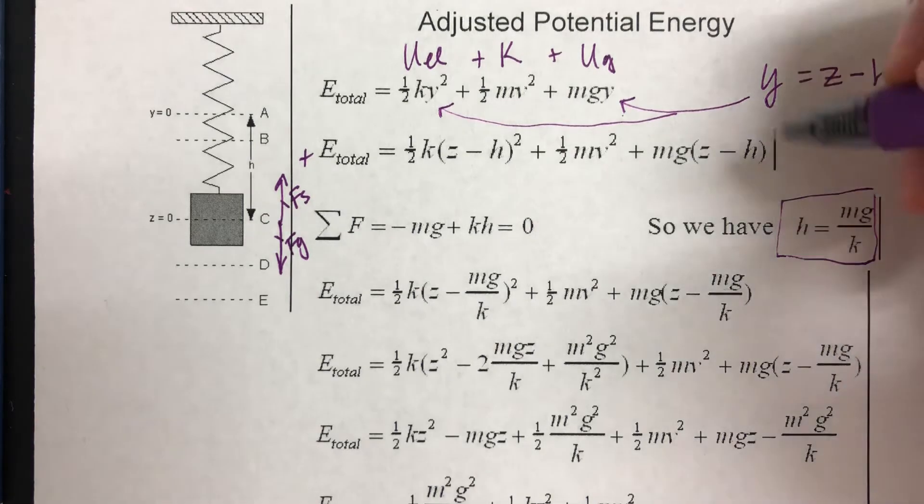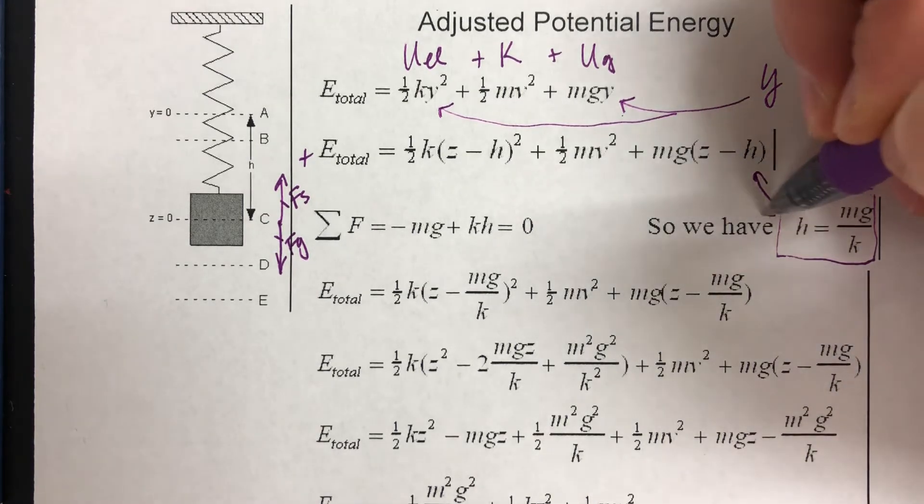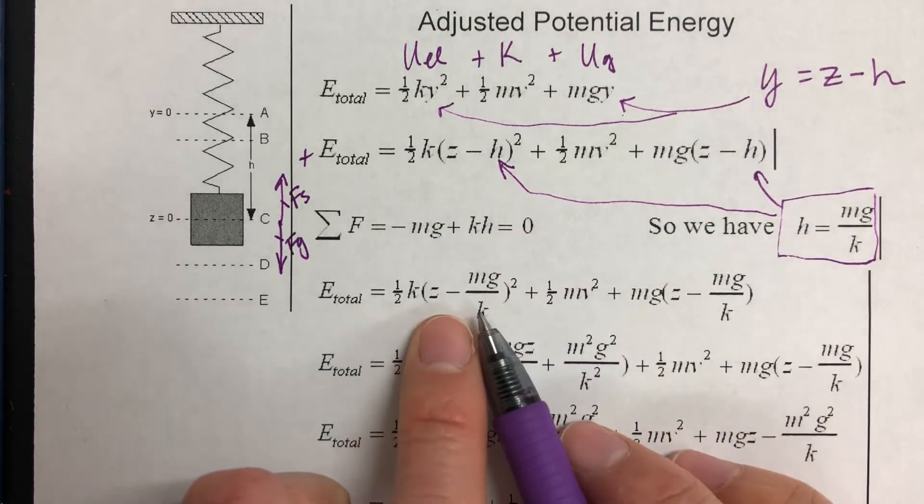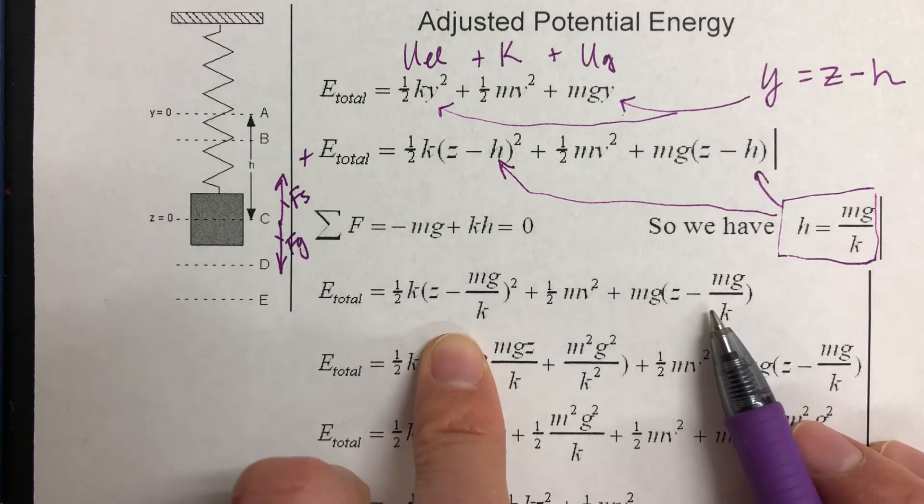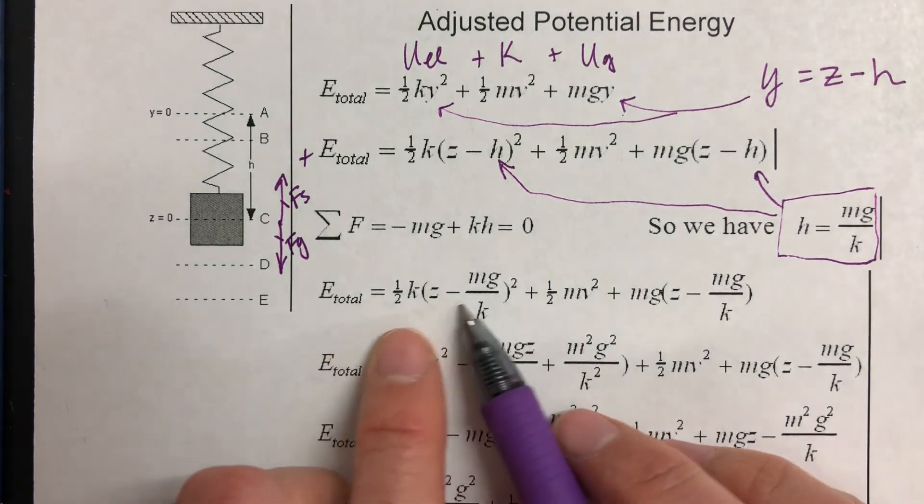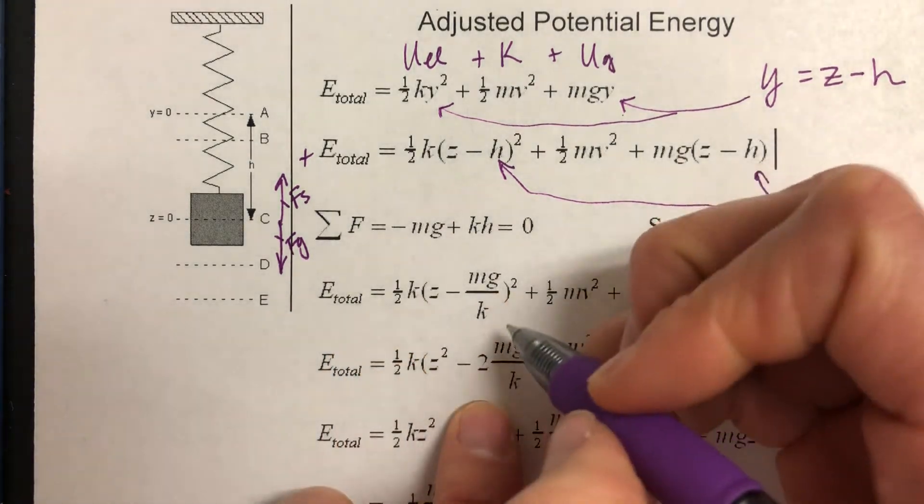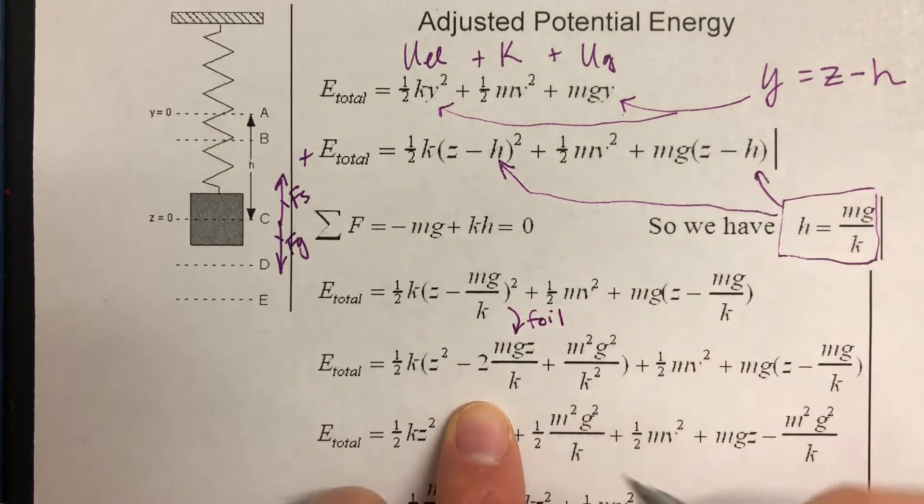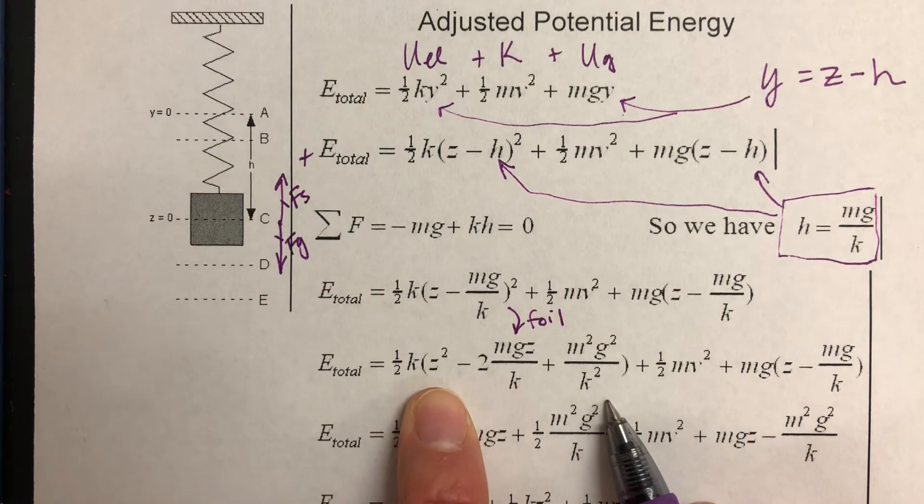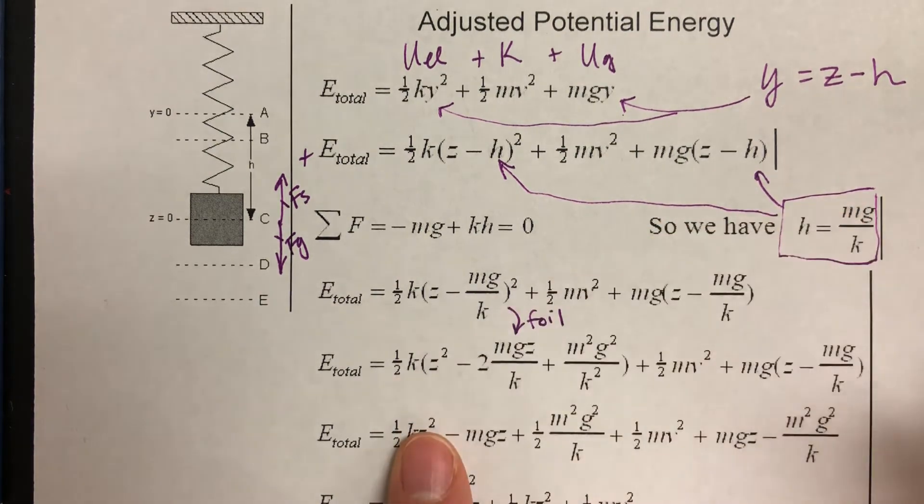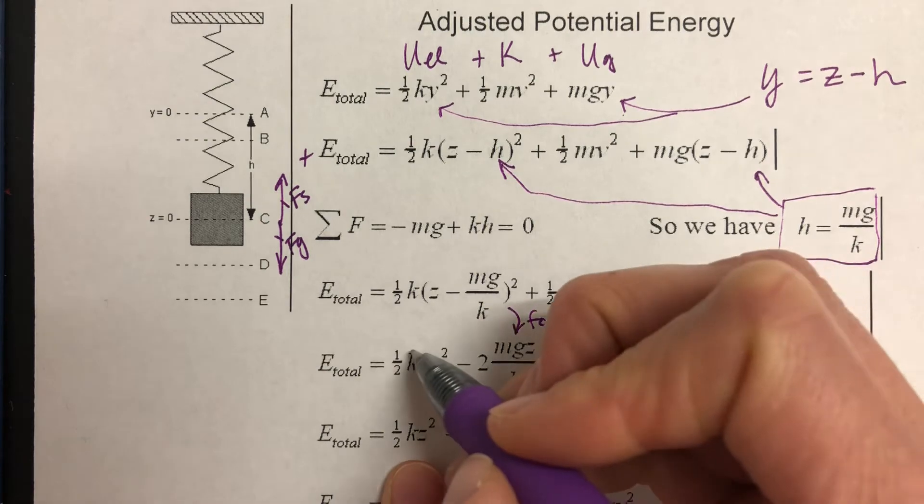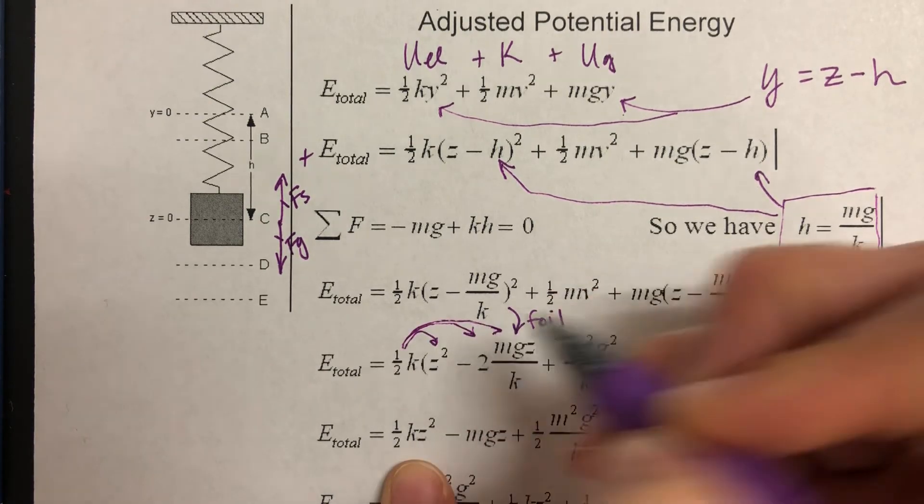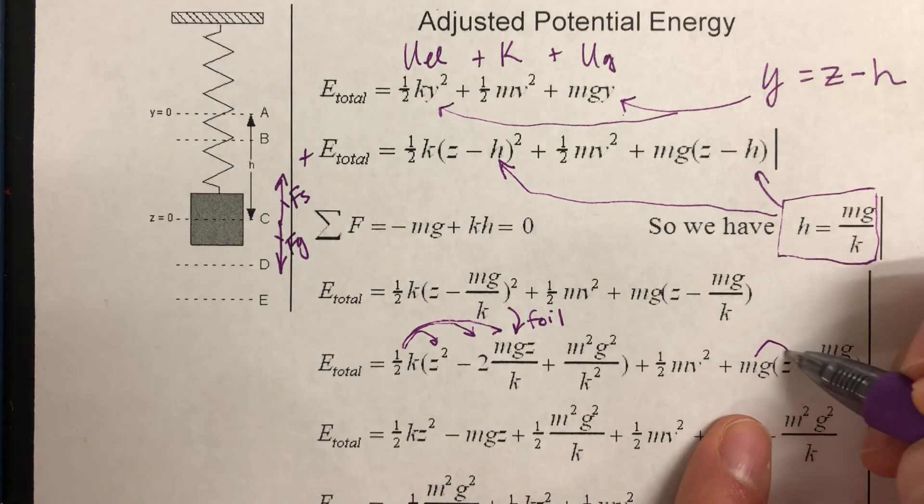Now I'm going to plug this in for my h's here. So now instead of z minus h, I have z minus mg over k in both places. Then I'm going to foil this. So from here to here, we are foiling. And we get this term. And then we're going to distribute the 1/2 k. We're going to distribute that to all three of those terms. And we're going to distribute the mg here.